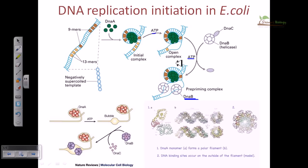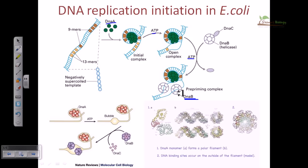For establishment of this step, we need two proteins: DNA A and DNA B. DNA A initiates the formation of the open complex, and this open complex formation facilitates the attachment of DNA B to the DNA strand. DNA helicase or DNA B cannot initiate the opening of DNA strands on its own, as we have seen in previous cases.